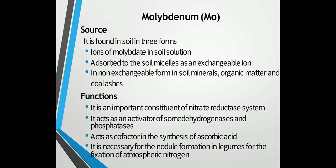The next micronutrient is molybdenum. It is found widely distributed in small amounts in soil and plants, but its higher concentration occurs in mineral oils and coal ashes. It is found in soil in three forms: ions of molybdenum in soil solution, as an exchangeable ion adsorbed to the soil particles, and in non-exchangeable form in soil minerals, organic matter and coal ashes.